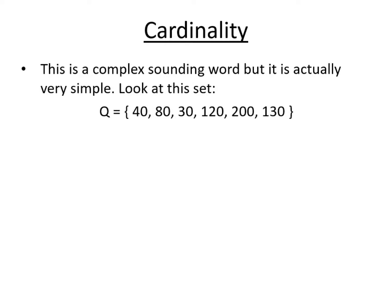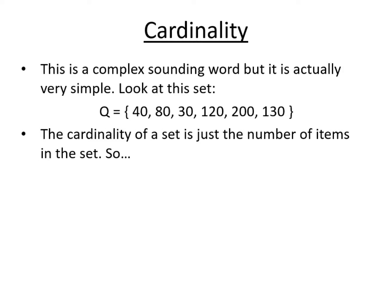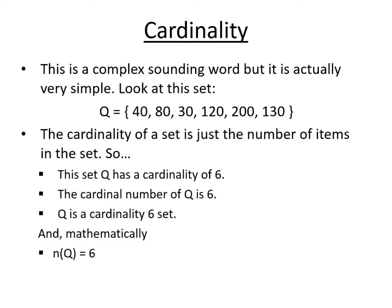The cardinality of a set is another concept, which is quite easy even though it has a big name. Set Q has a range of elements in it, but the cardinality of this set is just the number of items in the set. We count the number of actual items in the set — there are six of them. So we can say the set has a cardinality of six, or the cardinal number of set Q is six, or that N of Q is six — in other words, the number of items in set Q is six.